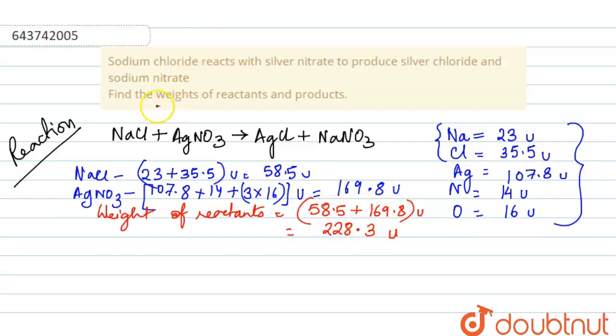This is the weight of reactants. Now for the products, we have to find that of AgCl first. So AgCl will be 107.8 plus 35.5 atomic mass unit, which is equal to 143.3.